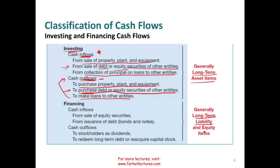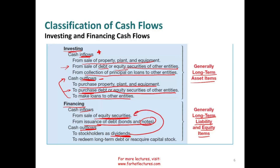The financing section deals with long-term debt and equity items. Cash inflow comes when you sell your own stocks, issue your own bonds, or borrow money. Cash outflow occurs when you pay shareholders dividends, redeem long-term debt, or reacquire capital stock — called treasury stock — which requires paying out money.